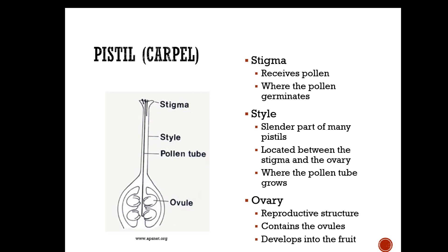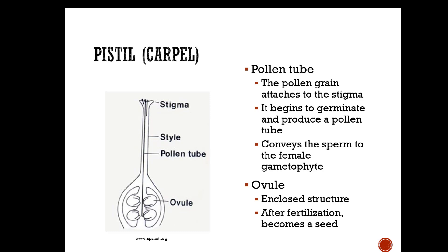The pistil or carpel consists of the stigma, the style, and the ovary. The stigma receives the pollen — that's where pollen germinates. The style is the slender part of the pistil located between the stigma and the ovary, and this is where the pollen tube grows. The ovary is the reproductive structure; it contains the ovules, and the ovary becomes the fruit that encloses the seeds, which the ovules become.